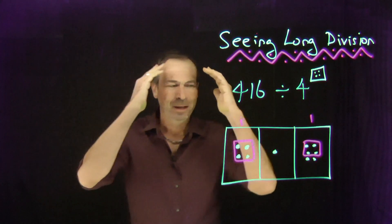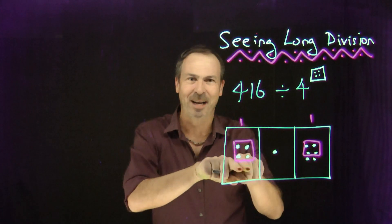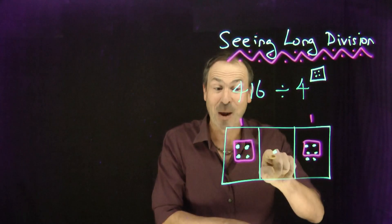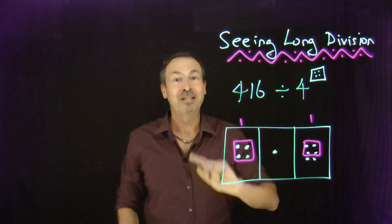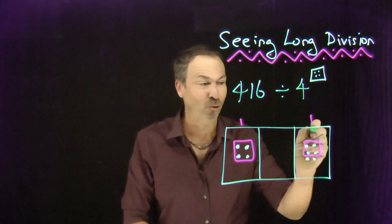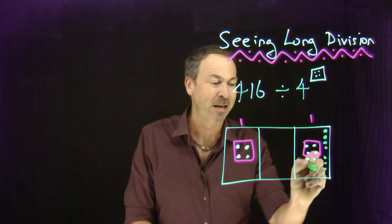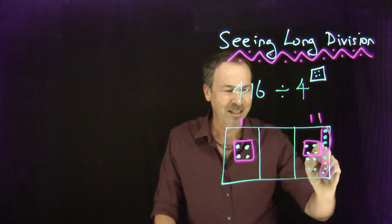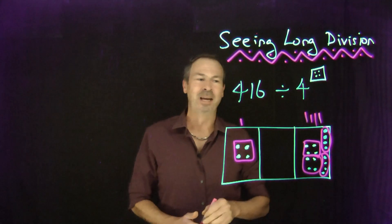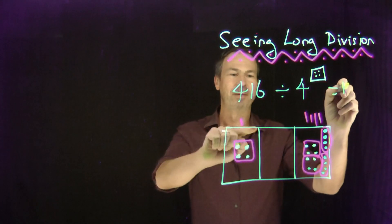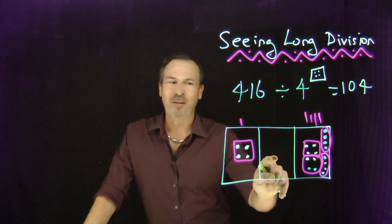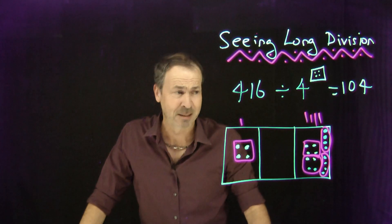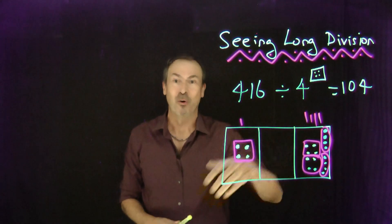Ten ones make a ten, ten tens make a hundred, and the reverse is that one ten is really ten ones. Let's use that to our advantage. This dot in the tens place is really ten ones — let me draw in ten ones. Now it's showing me loads more groups of four. Ten ones because there's another group of four, and another dot that must have been quadrupled, and another — and that's all the dots. I see the answer is 1, 0, 4 — that's what got quadrupled. This unexploding, or regrouping, makes one ten back into ten ones to see more groups.